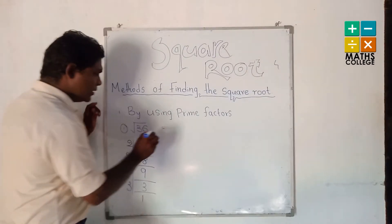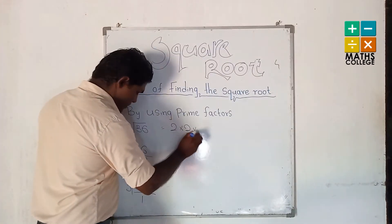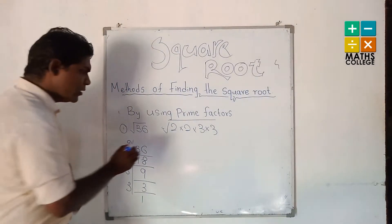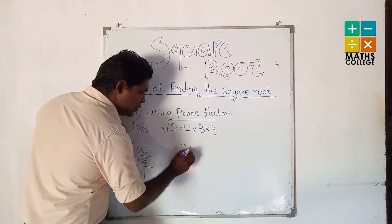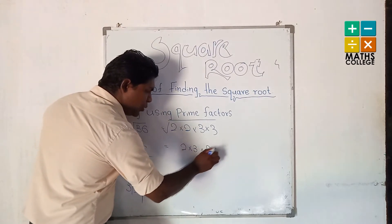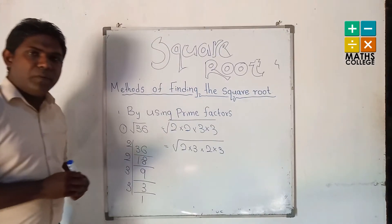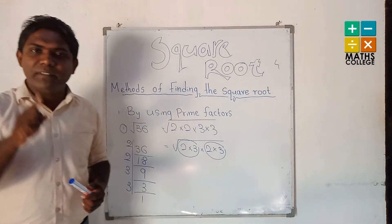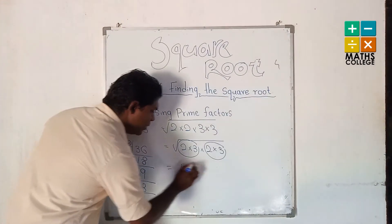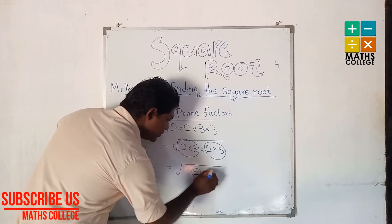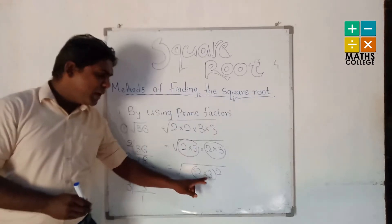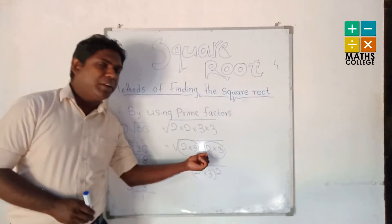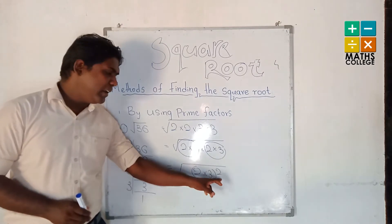We can write 36 as 2 × 2 × 3 × 3 under the square root symbol. You can see the pairs: 2, 3 and 2, 3. According to your grade 7 indices knowledge, we can find this as (2 × 3) squared. Why? Because we have a pair of 2 × 3, with base 2 × 3 and index 2.